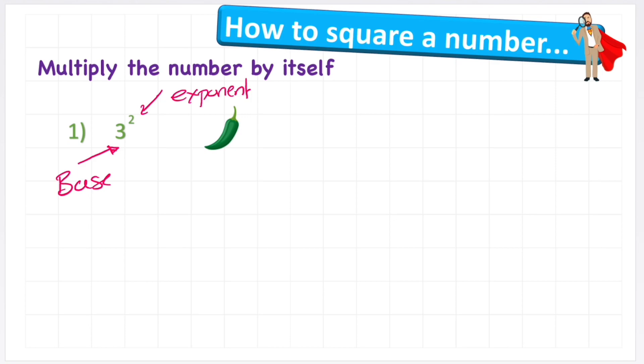So in this case, I'm multiplying 3 by 3. My number sentence will look like 3 multiplied by 3, and we know that 3 times 3 is 9. So my answer to 3 squared is 9.